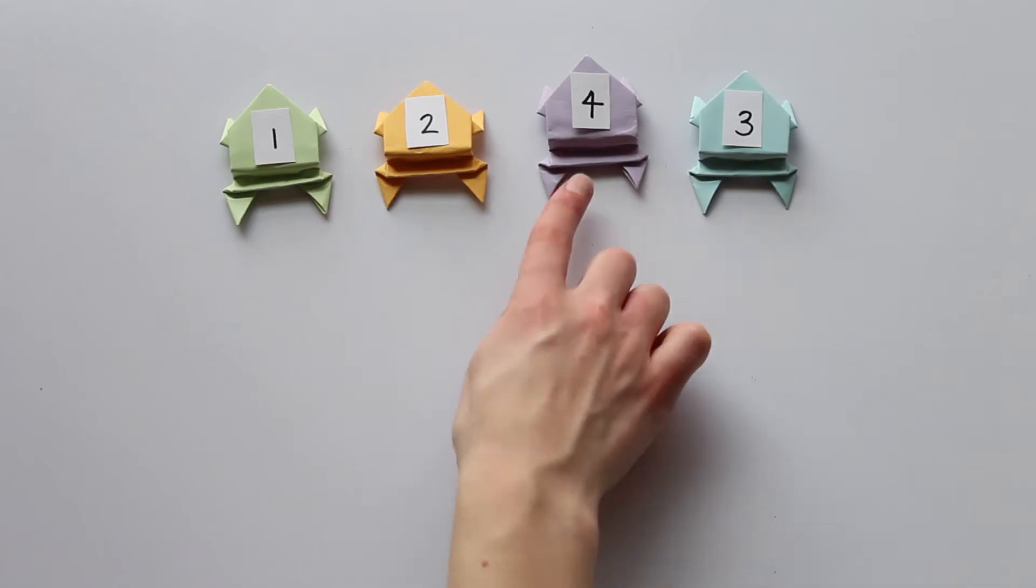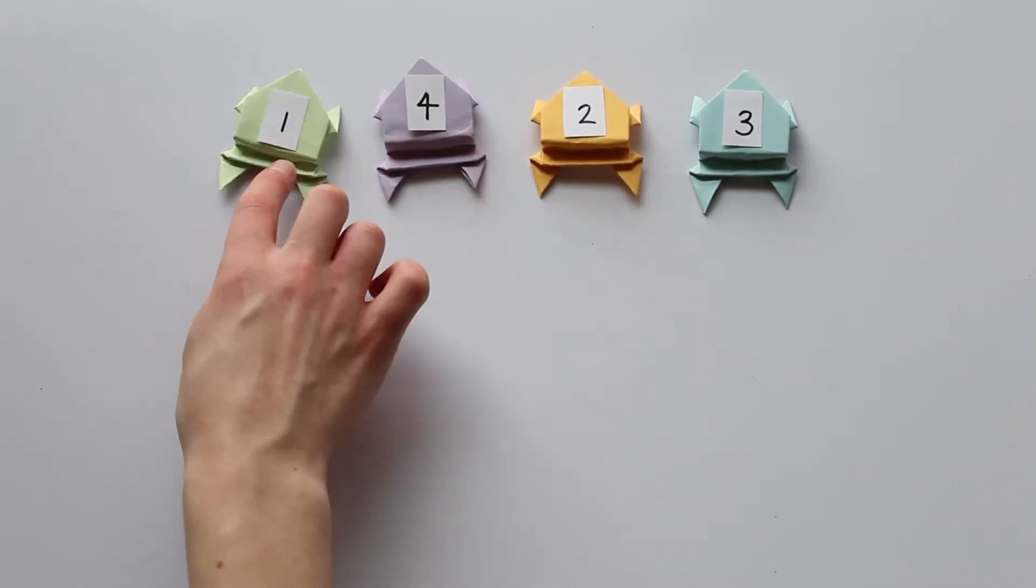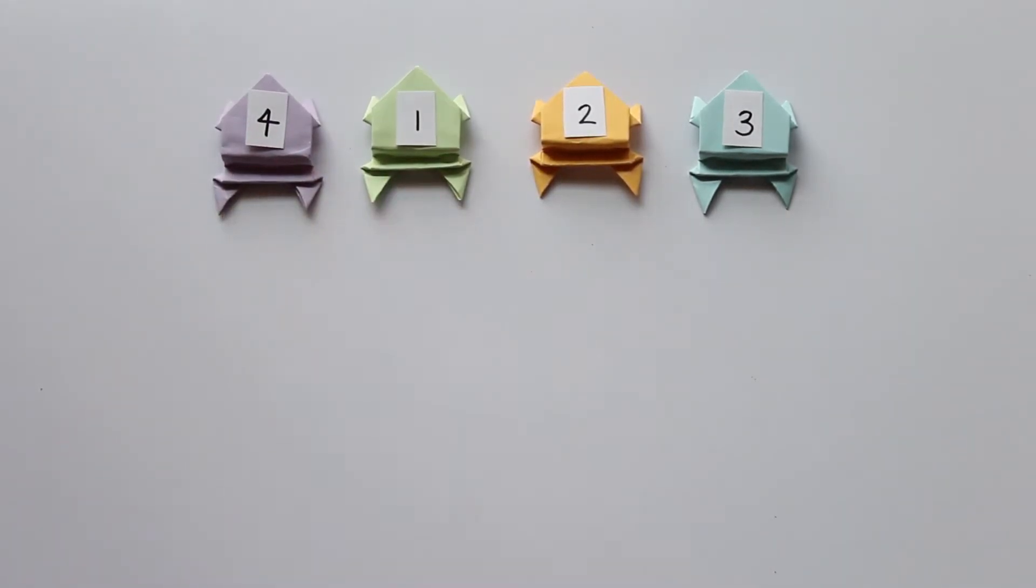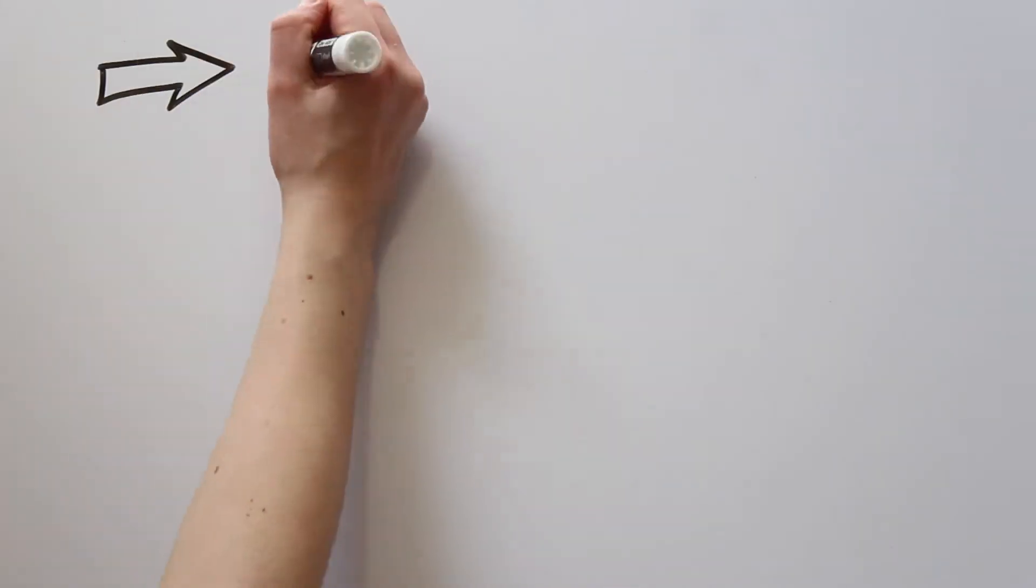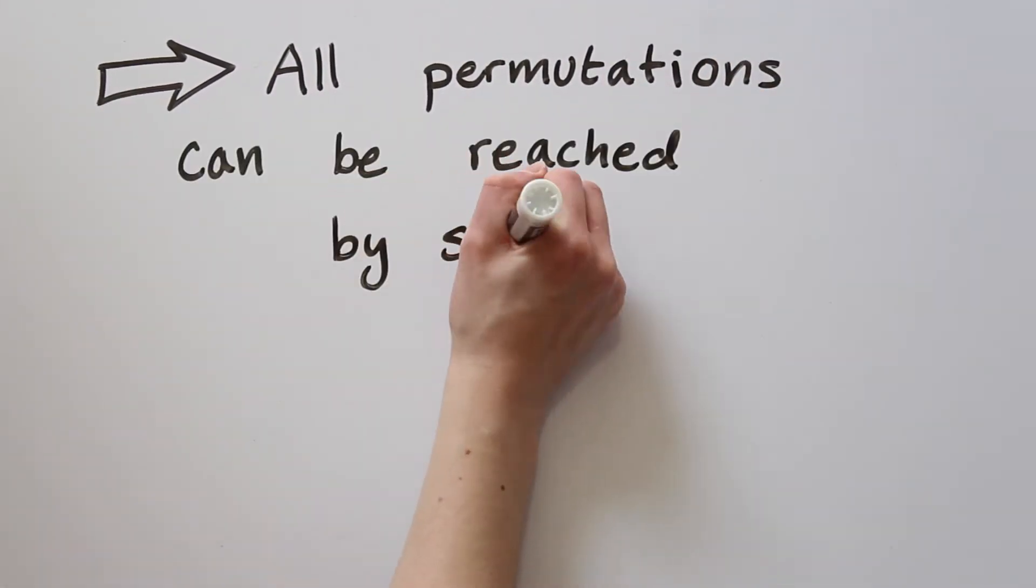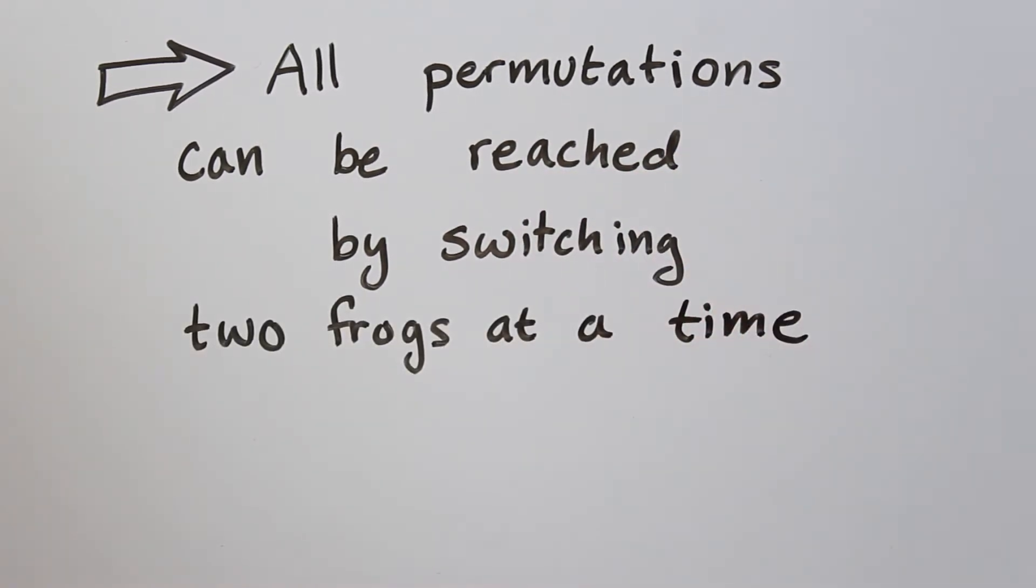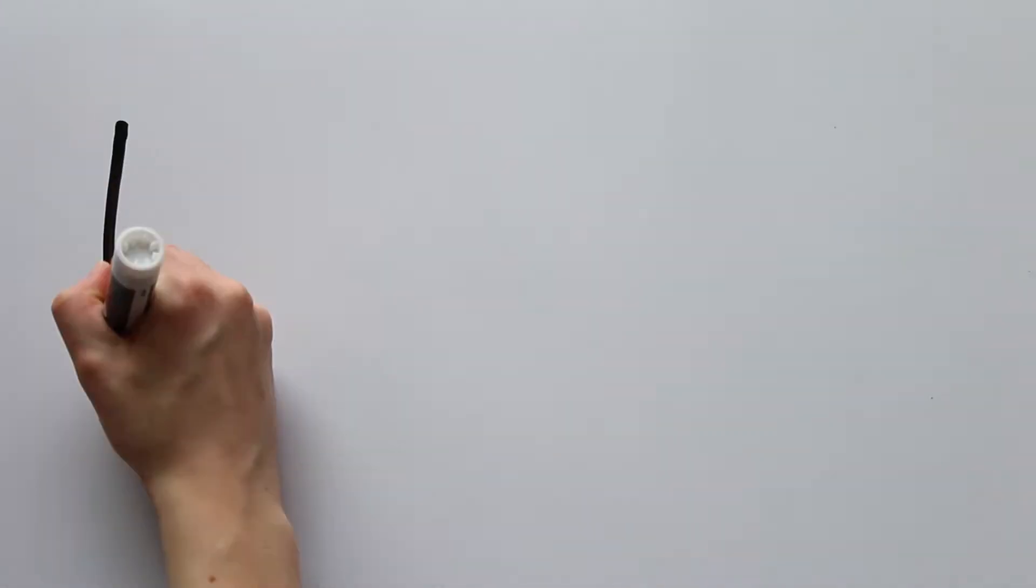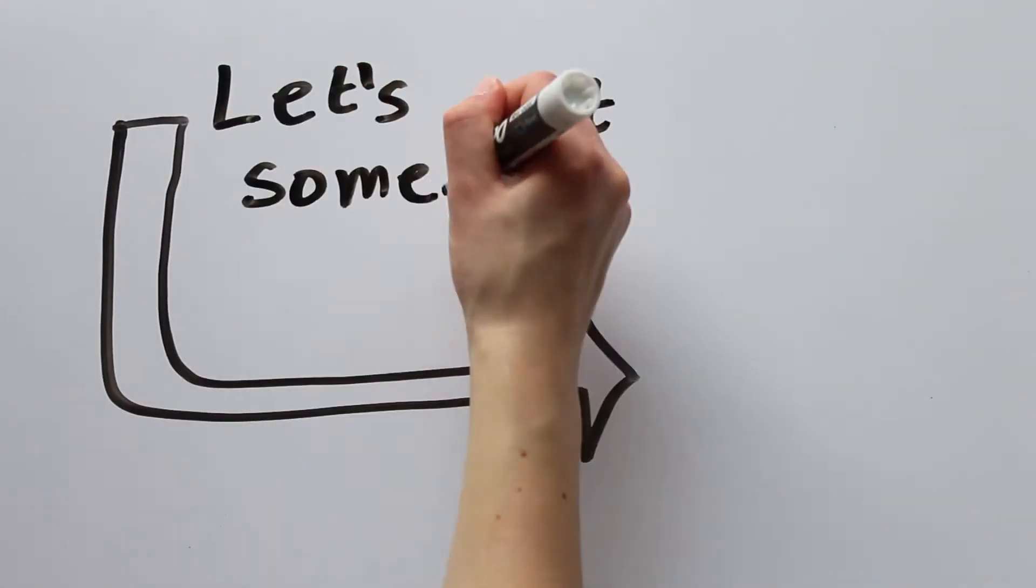Now if we wanted to go back to the mixed up ordering, we just perform all of the switches backwards. This method works for any permutation that we start with. It means that we can reach any ordering of the frogs just by switching two at a time. In order to talk about this in more detail, we're going to need a way to write things out. So let's get some notation.